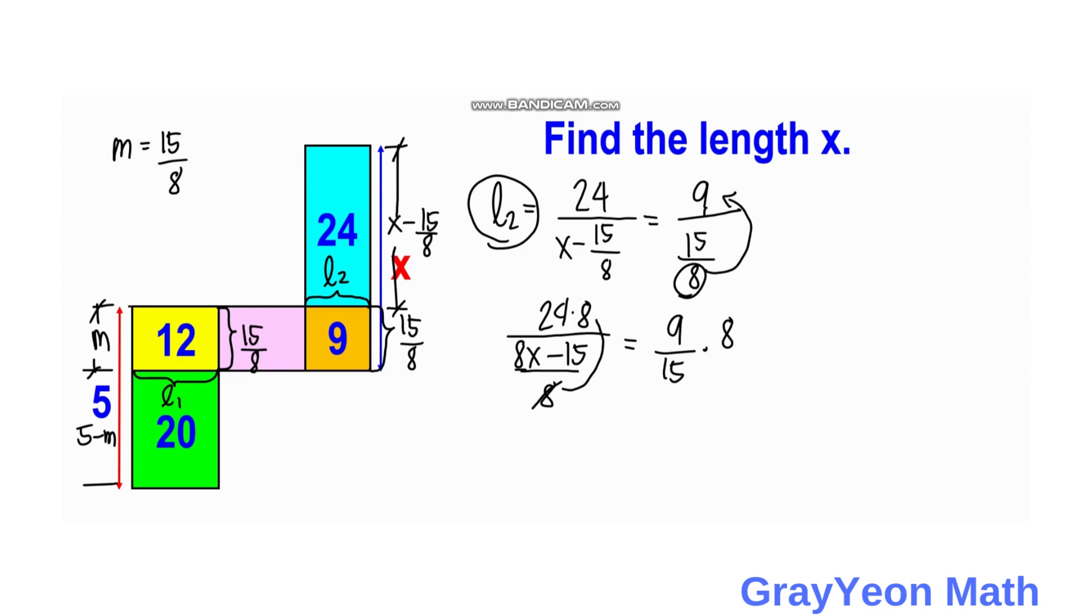So next thing is we cancel this 8. So for the right hand side, we divide by 3, the numerator and the denominator, so we have 3 over 5.